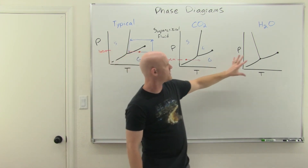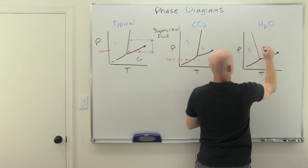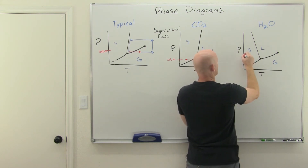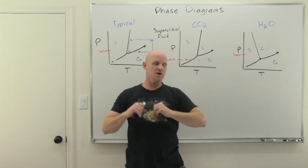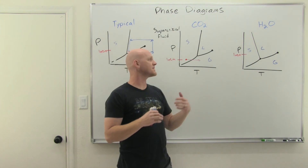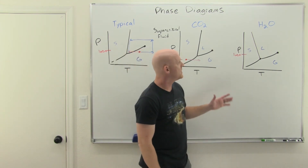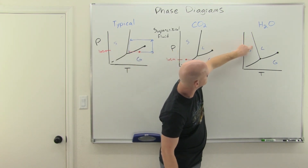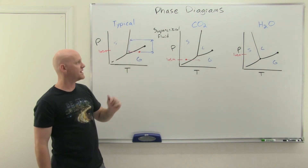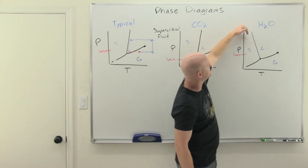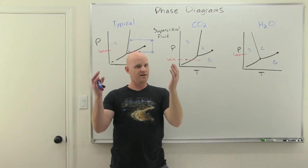For water, what makes it unique is not where one atmosphere lies — we still have solid, liquid, and gas, and one atmosphere is above the triple point. Water melts at 0°C and boils at 100°C at one atmosphere, and it doesn't sublime under normal atmospheric pressure. What's unique is the solid-liquid line of equilibrium. For a typical compound and for CO2, it has an uphill positive slope, but for water, it has a downhill negative slope. This is rather unusual and is due to hydrogen bonding.